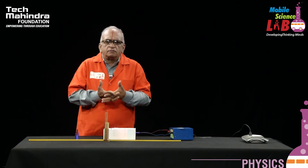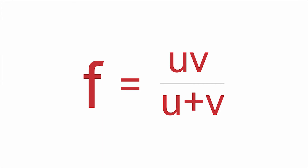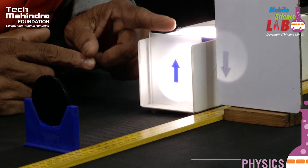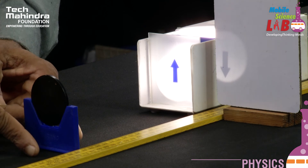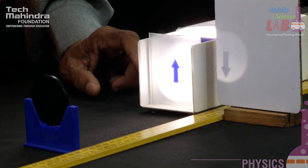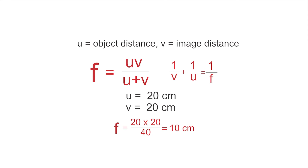The focal length of the mirror is given by the formula: f = uv / (u + v), where u is the distance between the object and the mirror, and v is the distance from the mirror to the screen. The mirror and object are separated by a distance of 20 centimeters — the object is at the 50 centimeter mark and the mirror is at the 30 centimeter mark, so u = 20 centimeters. When we substitute the values of u and v into the equation, the focal length turns out to be 10 centimeters.